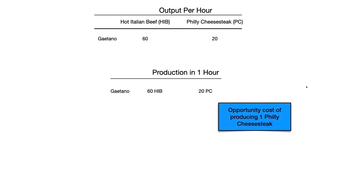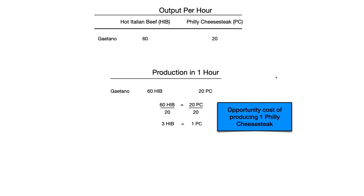In order to find the opportunity cost of producing one Philly cheesesteak, we equate these outputs and make them equal to one another. In one hour, 60 hot Italian beefs equals 20 Philly cheesesteak sandwiches. We then divide both sides by 20 so that we get what one Philly cheesesteak is equal to. In the time that Gaetano can produce one Philly cheesesteak, he could have produced three hot Italian beef sandwiches. So the opportunity cost of producing one Philly cheesesteak is equal to three hot Italian beef sandwiches.